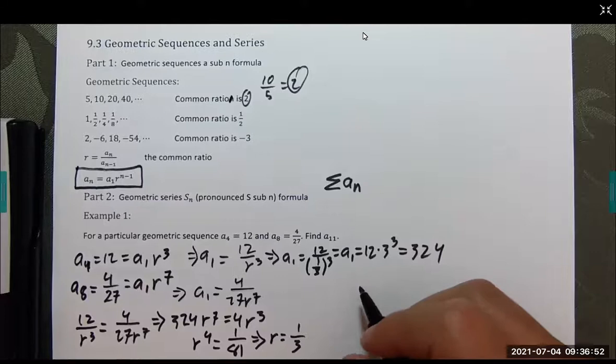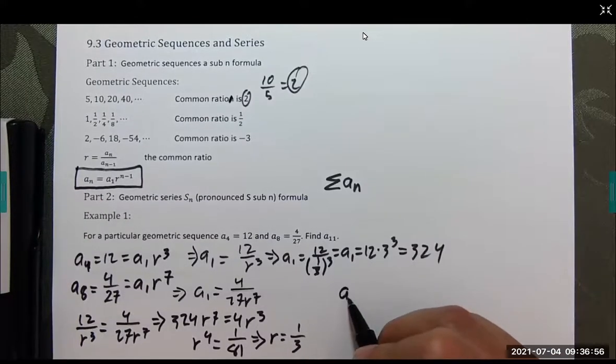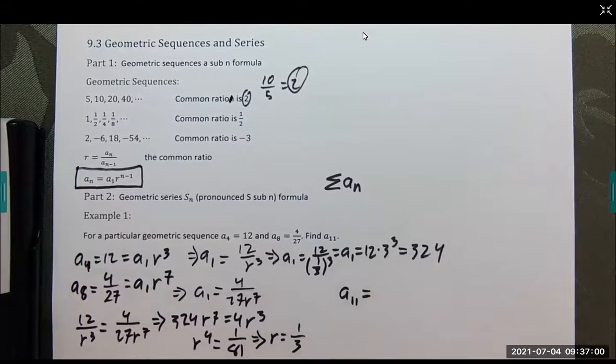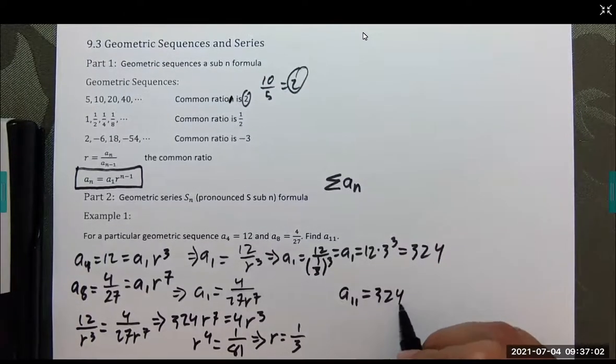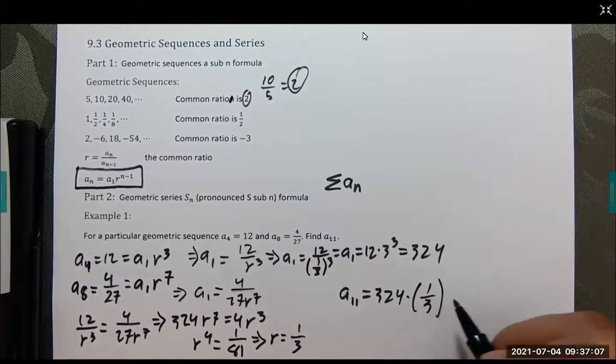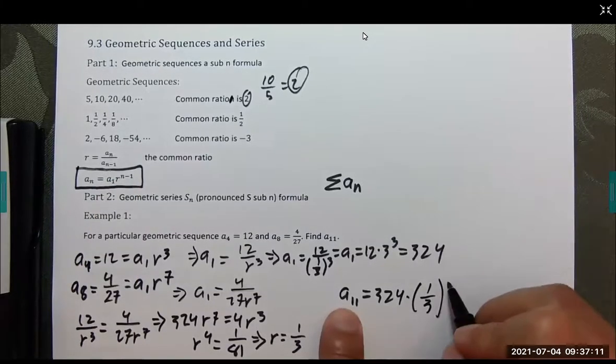Now I have a sub 1. Let's go back to our original. A sub 11 is going to be a sub 1, which is 324, times r which is 1/3. If you remember, it's r to the n minus 1, and it's 11 in this case, so we go to the 10th.